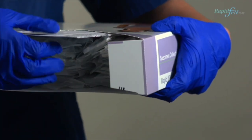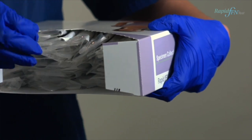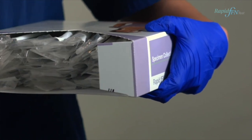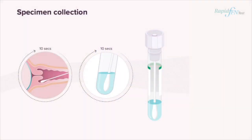Ensure you only use the specimen collection kit provided by Hologic for the purpose of a fetal fibronectin test. During speculum examination, lightly rotate the swab across the posterior fornix of the vagina for 10 seconds to absorb cervicovaginal secretions.